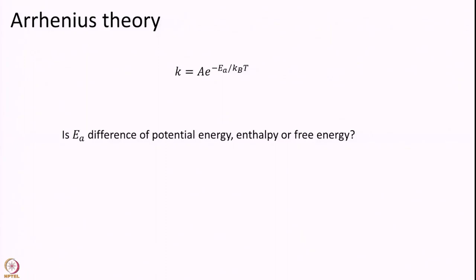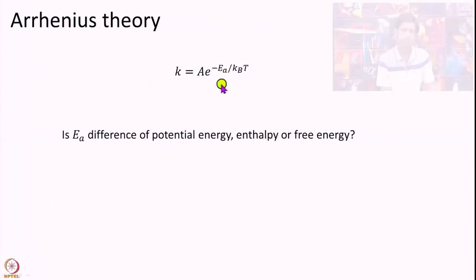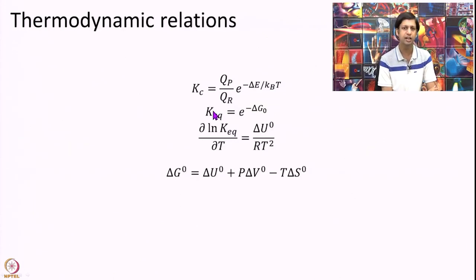So, let us start with this question. Arrhenius had originally written this formula. Well, Wentdorff had and Arrhenius had interpreted this as some activated state. But what exactly is Ea exactly? So, to answer that, let us analyze our theory a little bit. But to do that I will need a few thermodynamic relations today.